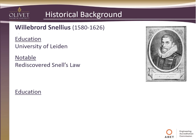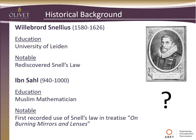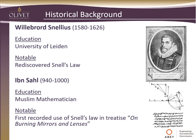There was another gentleman that documented Snell's Law first. His name was Ibn Sahl — all we know about him was that he was a Muslim mathematician, and he lived from 940 to 1000 AD. The notable thing is that it was discovered in his writings that he actually documented that relationship first. The name of his document was 'On Burning Mirrors and Lenses,' and here's a page from it where he's actually setting up the geometry for Snell's Law.